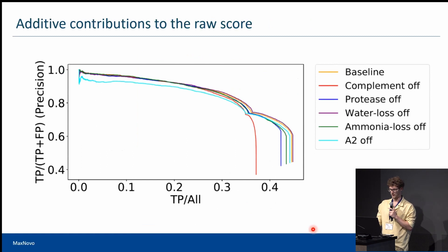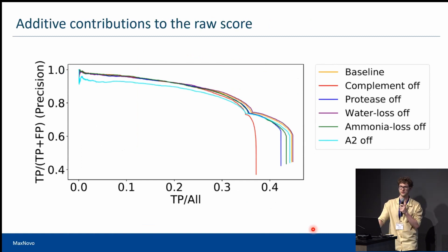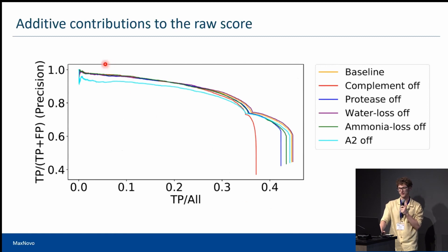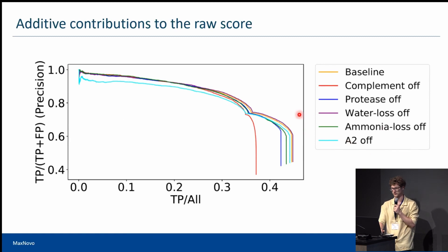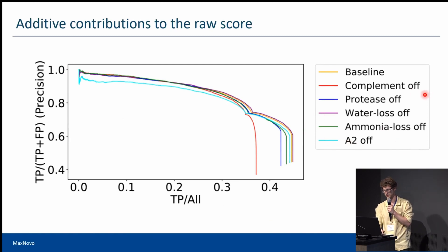We also checked the different contributions to the raw score, and we can see that in the high precision area, the A2 score matters the most, while for coverage the complement score matters the most.